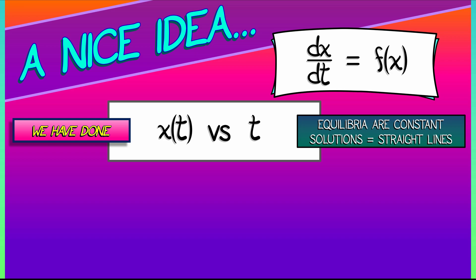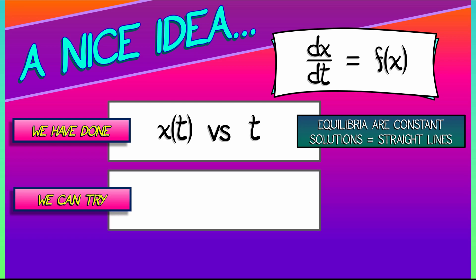But there's another way to do things. Let's try the following. Let's try plotting f of x versus x. Now, remember, f of x, that's the slope. That's dx dt. If we plot that versus x, we're getting rid of the t direction.